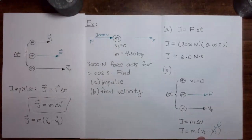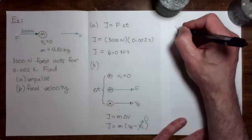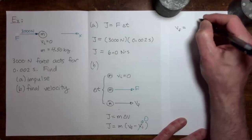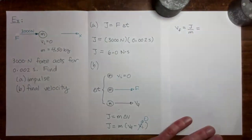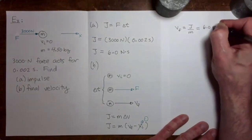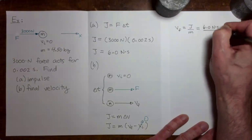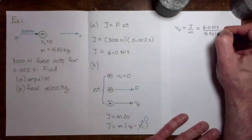So now let's solve for the final velocity. We have final velocity equals impulse over mass. We have already calculated that the impulse is 6.0 newton seconds. The mass was given as 4.50 kilograms.